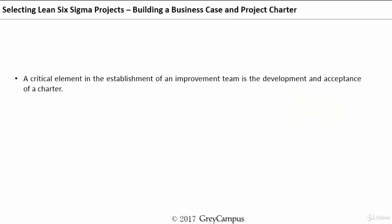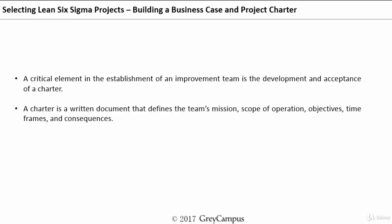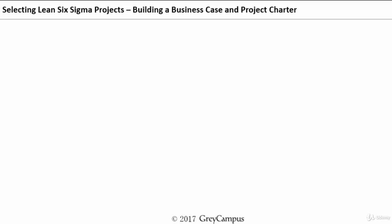One of the very important activities during the Define phase of the Six Sigma project is the development and acceptance of the project charter. A project charter is a written document that defines the team's mission, scope of operation, objectives, timeframes, and the benefits. A charter is also a commitment for support from top management with respect to providing the resources for the improvement project.